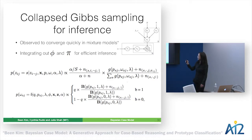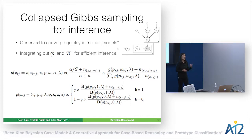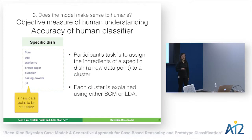We use collapsed Gibbs sampling for inference, integrating out variables phi and pi that we don't need directly. If you're curious about phi and pi after obtaining other latent variables, you can recover them from the collapsed representation.